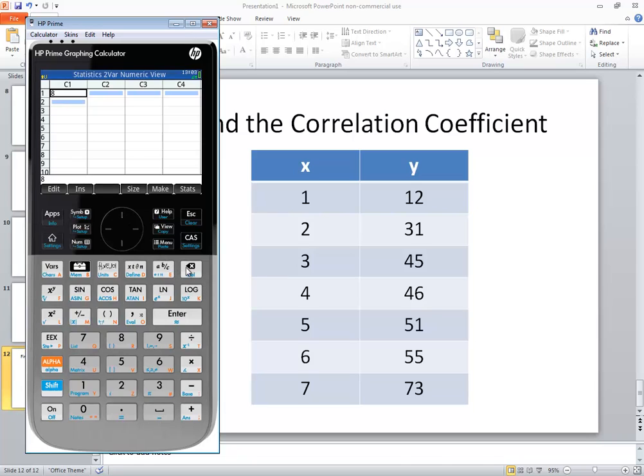If you get any numbers here, you can get rid of it by highlighting it and then pressing your delete button. We got one through seven, so do one enter, two enter, three enter, four, five, six, and seven. Then I'm going to go over to c2.